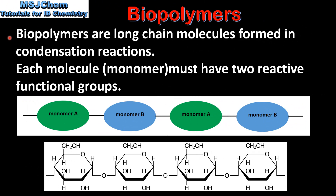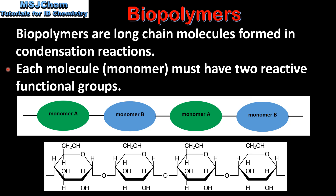Next we look at biopolymers. Biopolymers are long chain molecules formed in condensation reactions. To form a biopolymer, each molecule or monomer must have two reactive functional groups. Here we have an example of a biopolymer which is made of alternating monomers A and B. The monomers are bonded through condensation reactions in which a molecule of water is released.